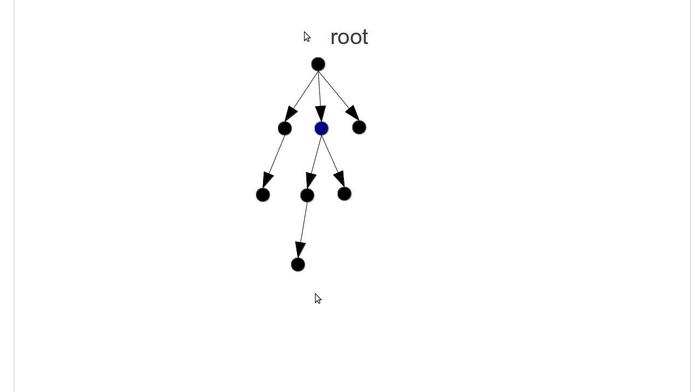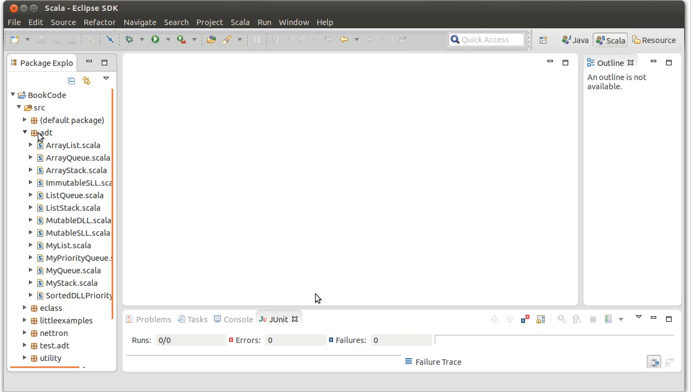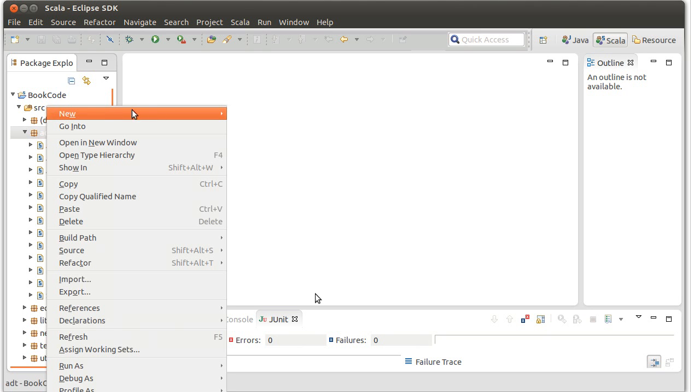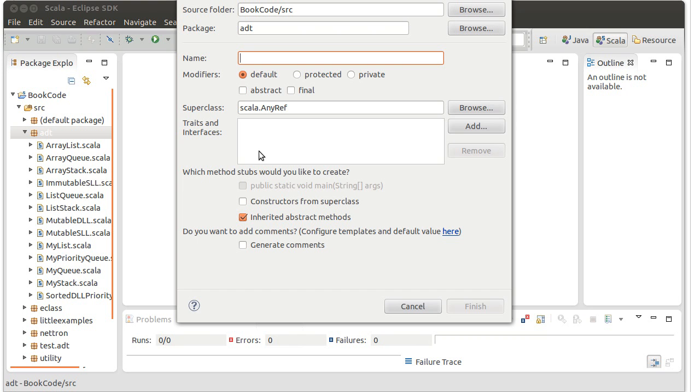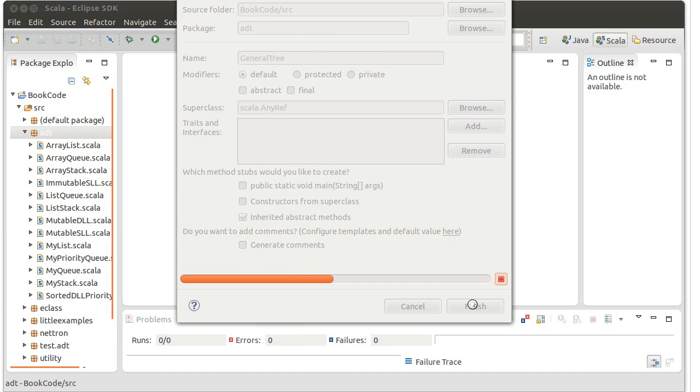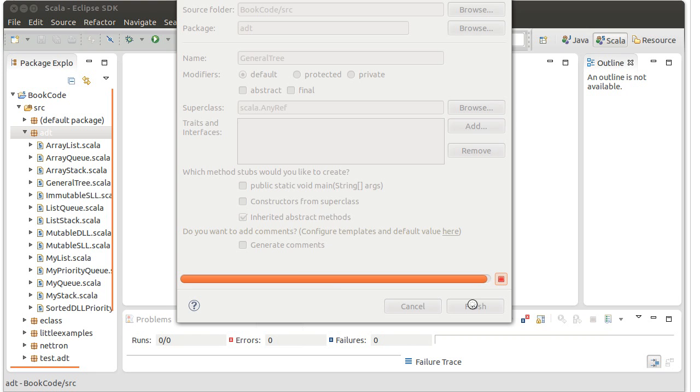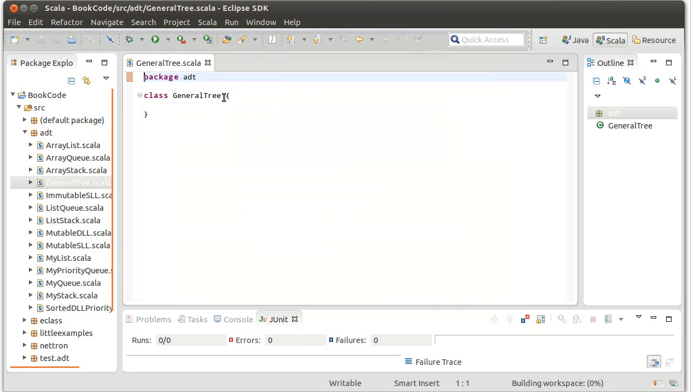So if I wanted to write code for this, we'll go ahead and put it in our ADT, at least start writing something here. So I'm going to make a general tree class. Just like with our linked list, I'm going to go ahead and create a class of type node in here.